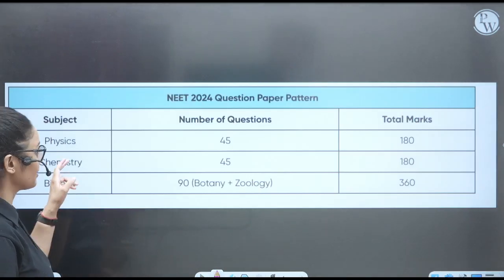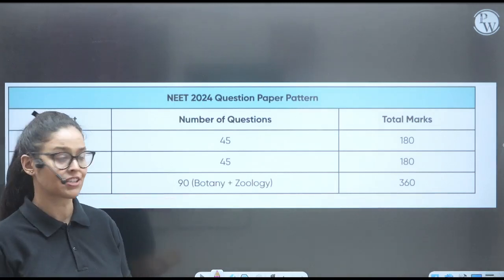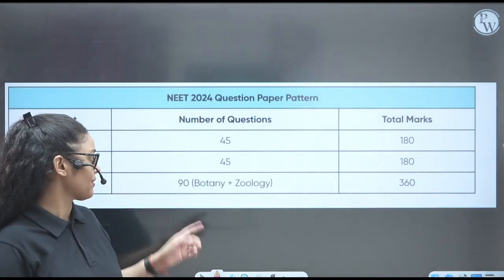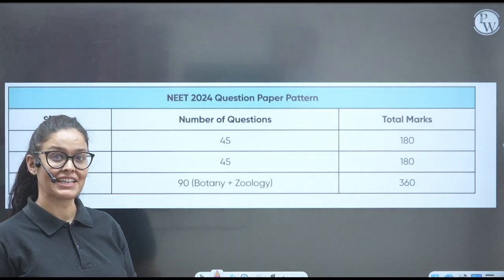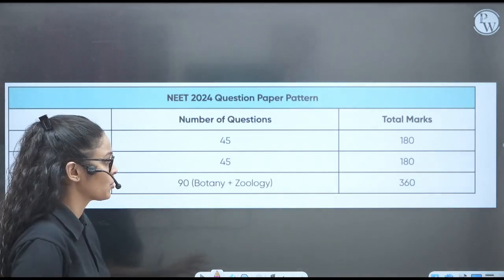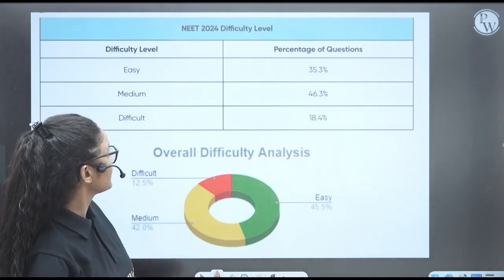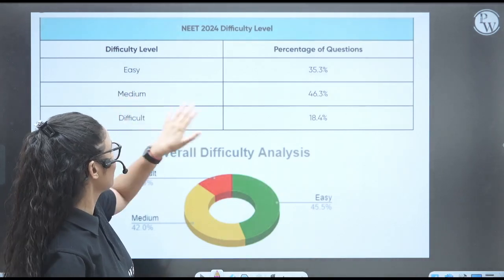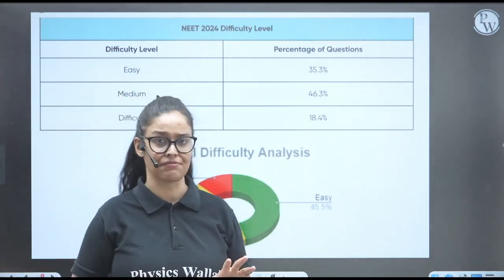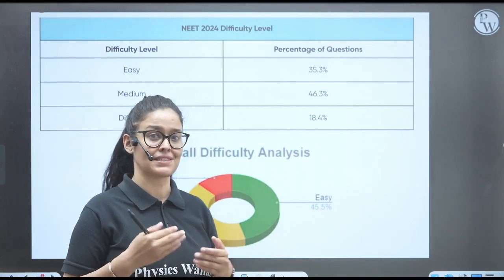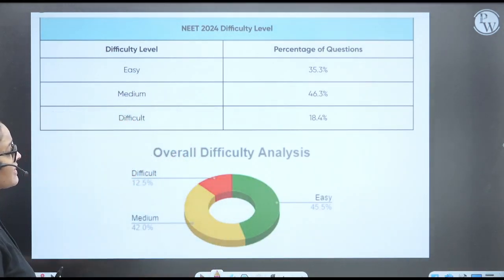So we know that from physics we have 45 questions. From chemistry we have 45, and from biology we have 90 questions - 45 from botany, 45 from zoology. So total 720 marks. Now we will see difficulty level: 35% easy, 46% medium, and 18% difficult. So this was the difficulty percentage of the paper, difficulty level of the paper. You can see over here, right?